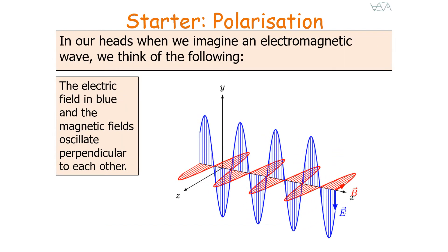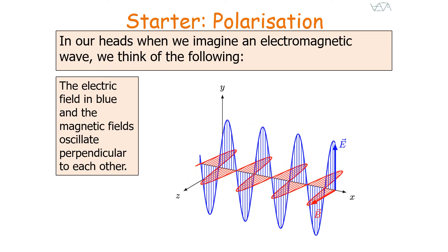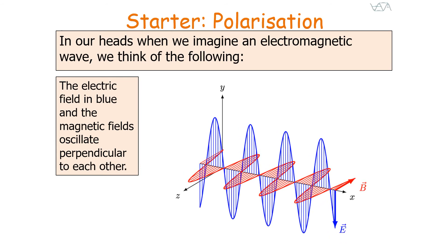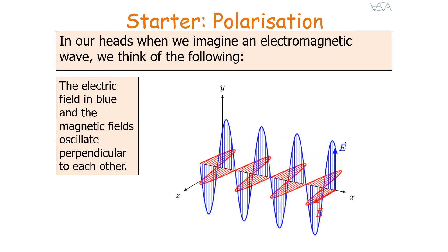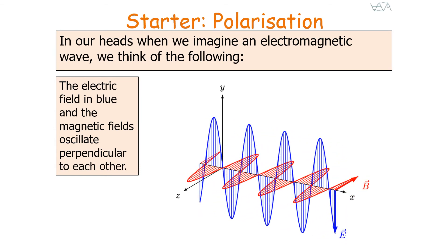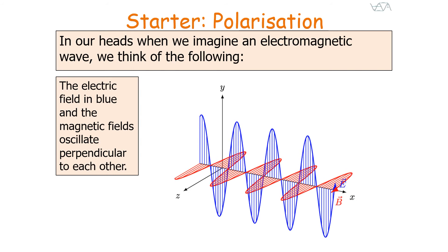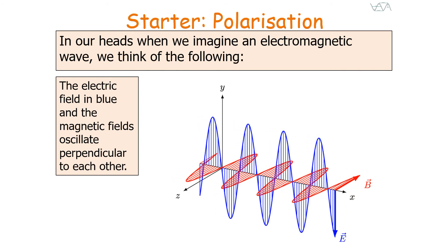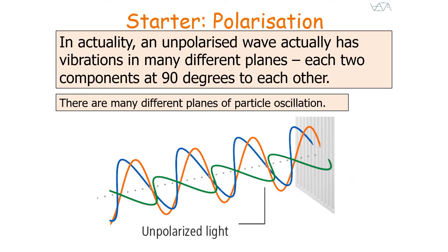When we imagine an electromagnetic wave, we think of the electrical field in blue and the magnetic field in red oscillating perpendicular to each other. But in actuality, an unpolarised wave has vibrations in many different planes, with the two components at 90 degrees to each other. So in an unpolarised wave, there are many different planes of particle oscillation.